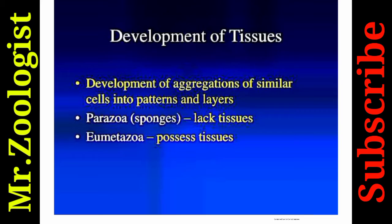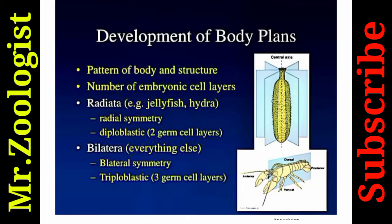Development of tissues refers to the aggregation of similar cells into patterns and layers. When similar cells performing the same function are united together, they form tissues. For example, sponges (Parazoa) have no true tissues. Eumetazoa possess true tissues — groups of similar cells that can perform a similar function at the same time. Next is development of body plans: the pattern of body and structure is determined by cell fate determination and the number of embryonic cell layers.